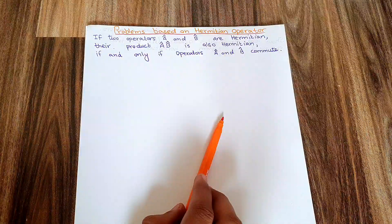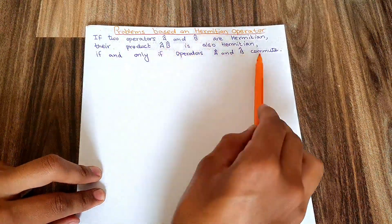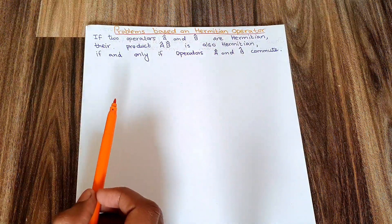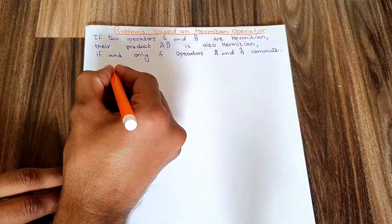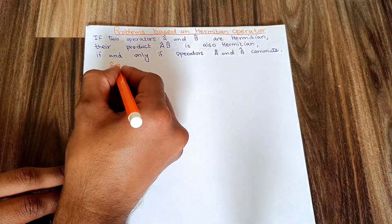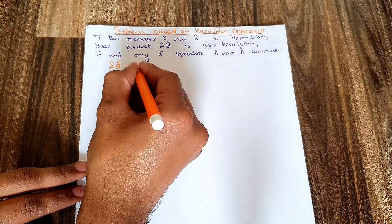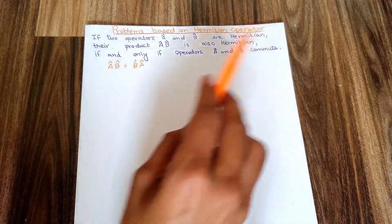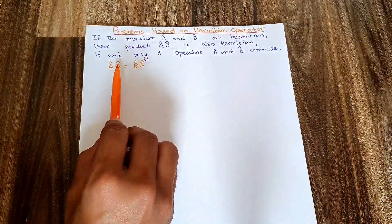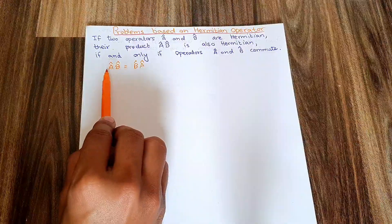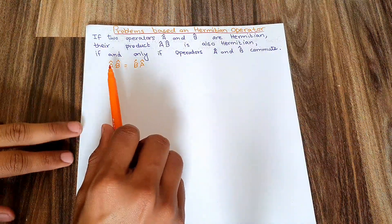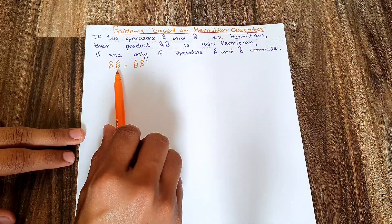The product AB can be Hermitian if and only if the product is commutative. The commutative product means that if I have operator A and operator B, then AB should be equal to BA — it doesn't matter whether I apply B first or A first.